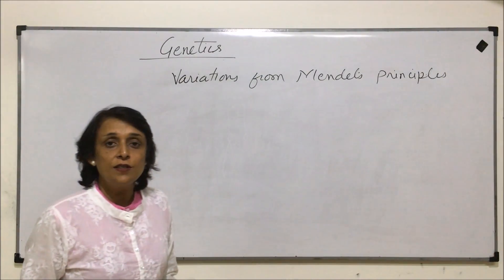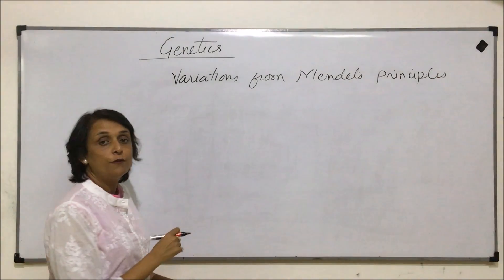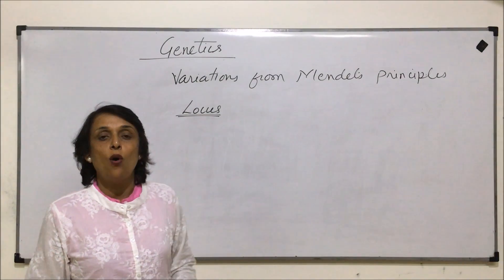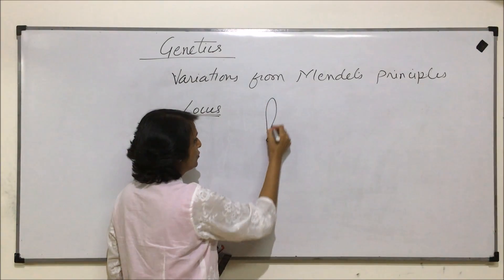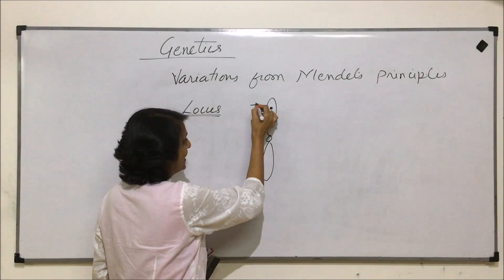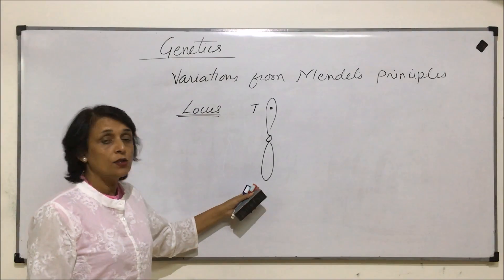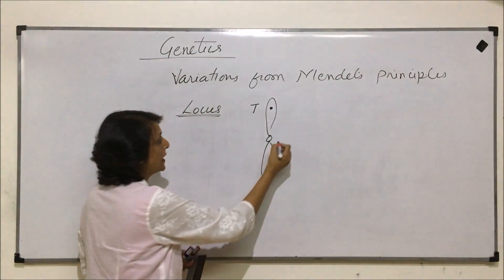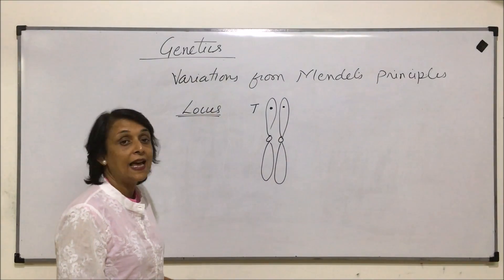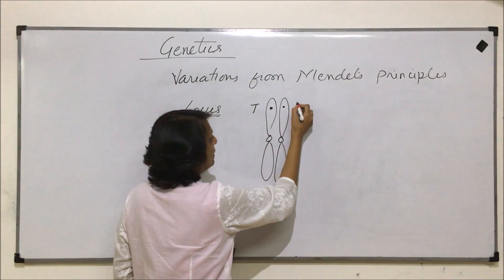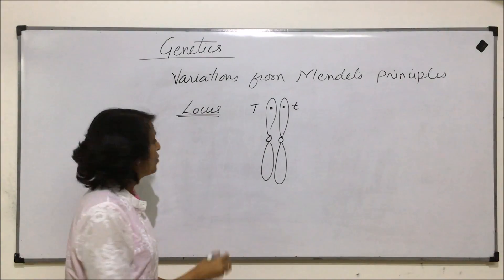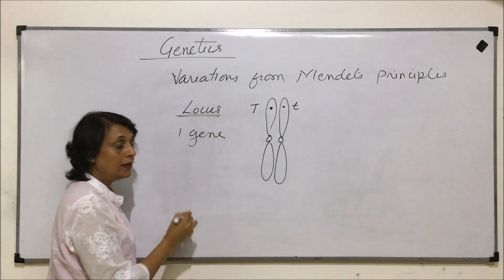Before we take up these variations, we need to understand one more concept, and for that we need a term called locus. Locus is the position of a gene on a chromosome. If we draw a chromosome and say this is the location where the gene for height — that is tallness — is located, this chromosome will have its homologue. In a homologous pair, the other form of the gene is at the same locus. It could be a recessive gene or another dominant gene, but when we talk of these two, we are talking of one gene and two alleles.